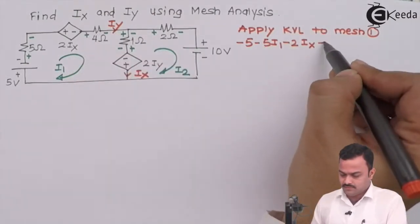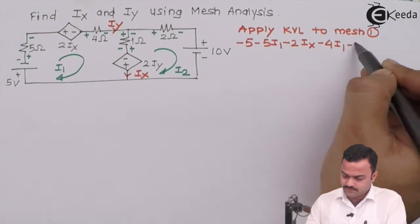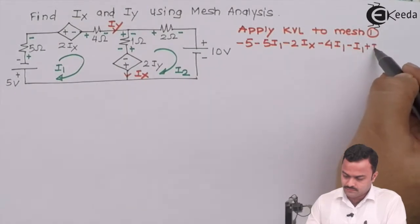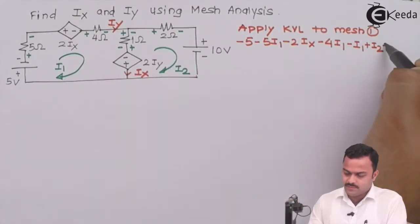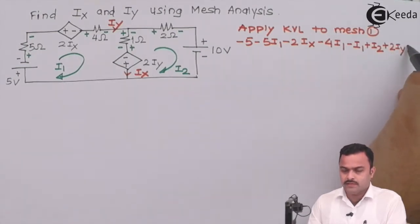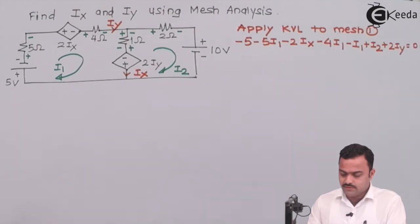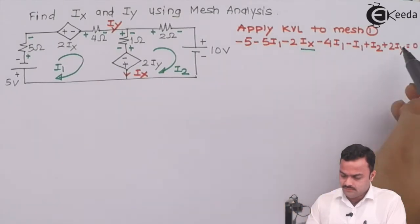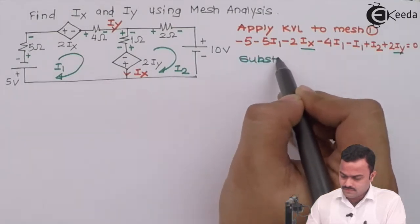Here iy is a variable that needs to be replaced with a substitution equation. iy is the branch current for this branch flowing downward. This branch is common between two meshes where i2 flows downward and i3 flows upward. Since the given direction is downward, i2 is dominant, so iy equals i2 minus i3.